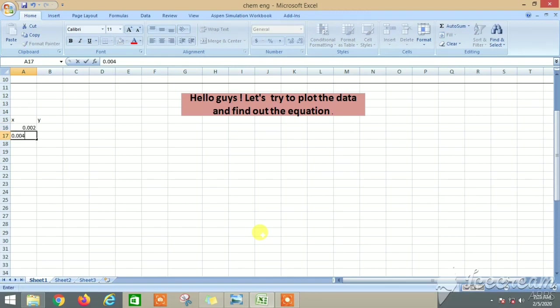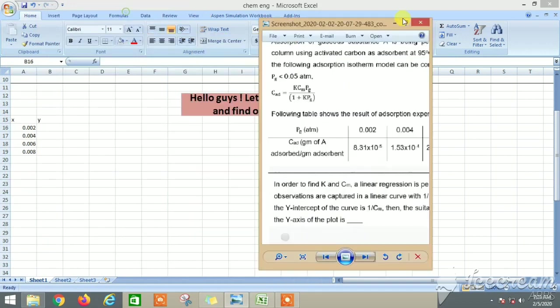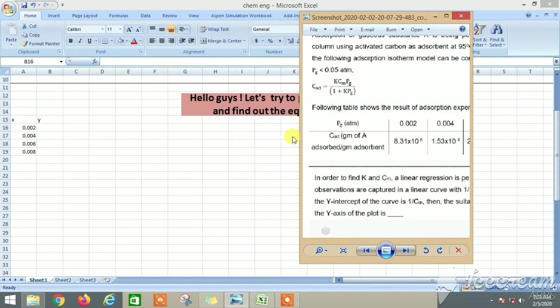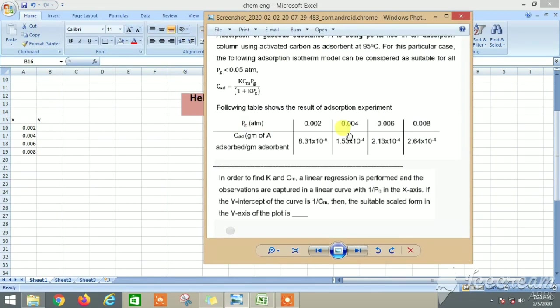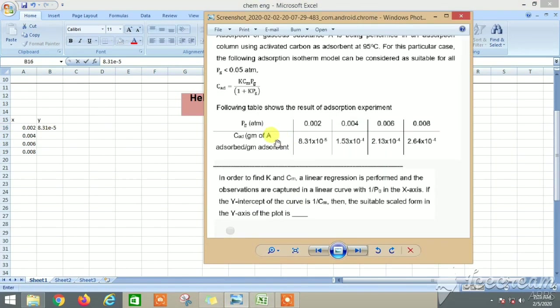This is x-axis, so let's write the numbers first: 0.004, 0.006, 0.008. Good. And this data...